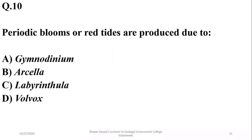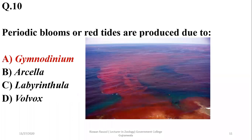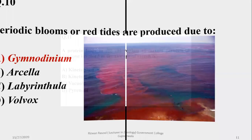Question ten: red or harmful algal blooms are produced due to a type of algae known as Gymnodinium (dinoflagellates). These blooms may also be toxic. So the correct option is A.